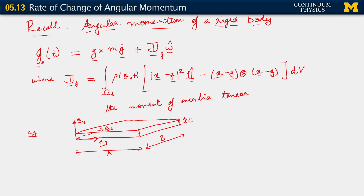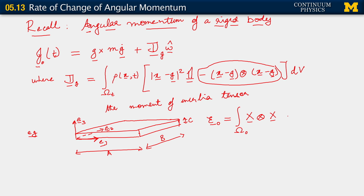For this sort of structure, I want to put down a couple of results. We consider E_0, sometimes called the Euler tensor for the moment of inertia. It comes out from the tensor product component of the moment of inertia formula, without the minus sign. We compute E_0 about the origin, so in the reference configuration: E_0 is defined as the integral over omega-naught of x tensor x multiplied by rho_0 dV.